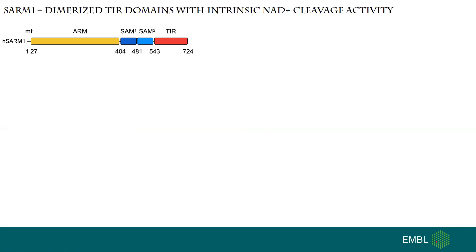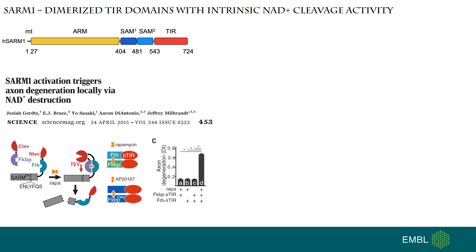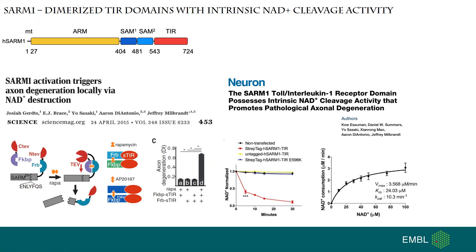SARM1 contains three different domains: ARM, SAM, and TIR domain. It was shown by a beautiful study from Bhatt-Bhattacharya's lab that actually NAD destruction locally would trigger axon degeneration by SARM1. The same lab showed that this is done in an enzymatically catalyzed step where the enzyme itself is SARM1, making it the first member of the TIR interleukin-1 receptor family to show enzymatic activity and NAD destruction.